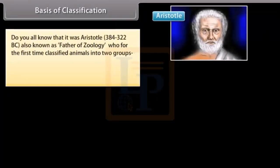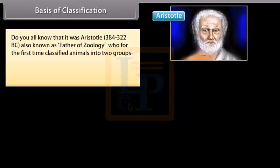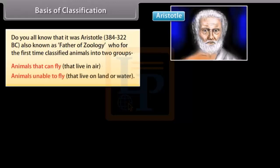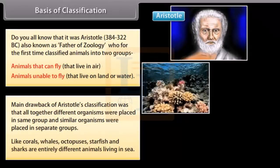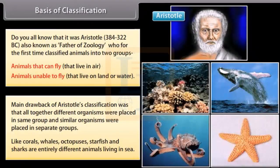Aristotle (384–322 BC), also known as the father of zoology, was the first to classify animals into two groups: animals that can fly and live in air, and animals unable to fly that live on land or water. The main drawback of Aristotle's classification was that altogether different organisms were placed in the same group. Like corals, whales, octopuses, starfish and sharks are entirely different animals living in the sea.